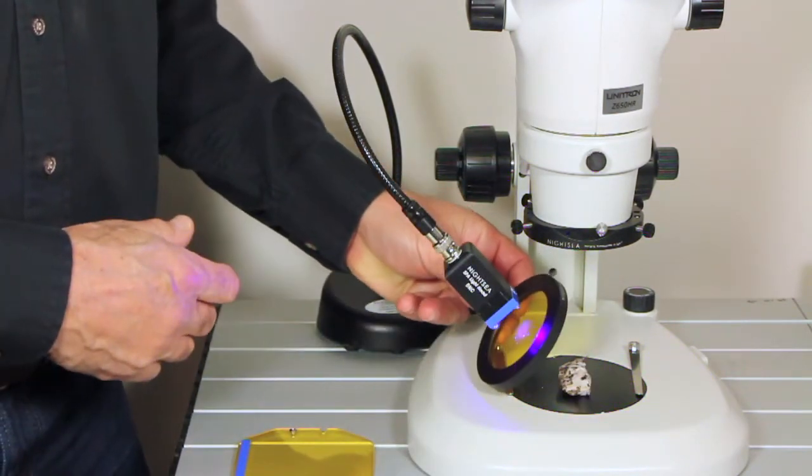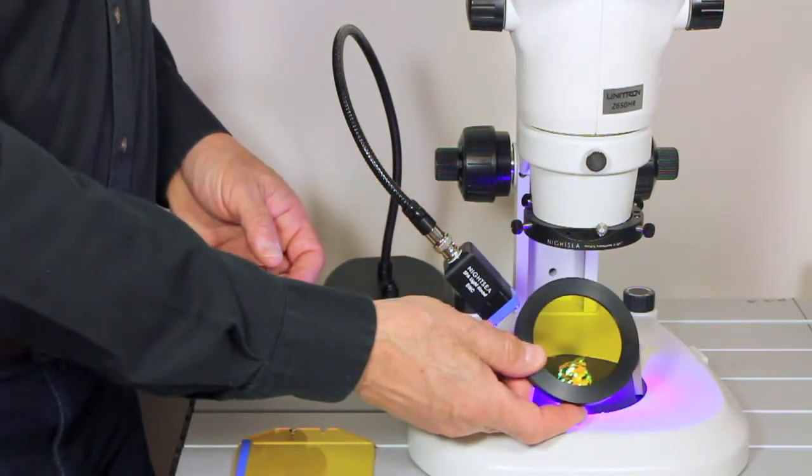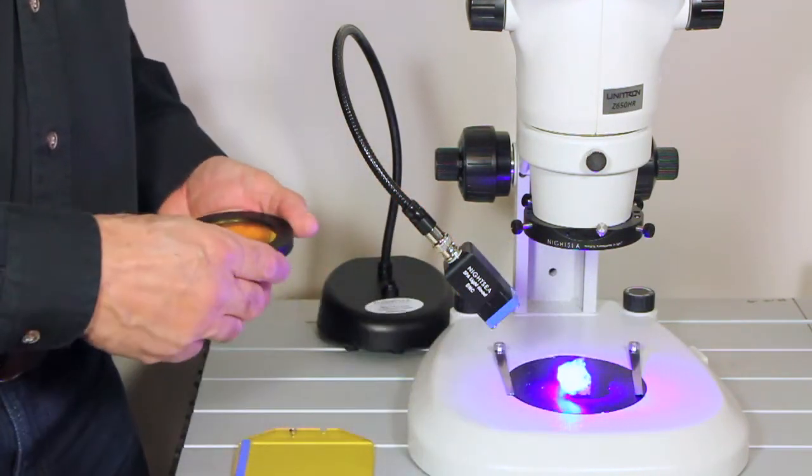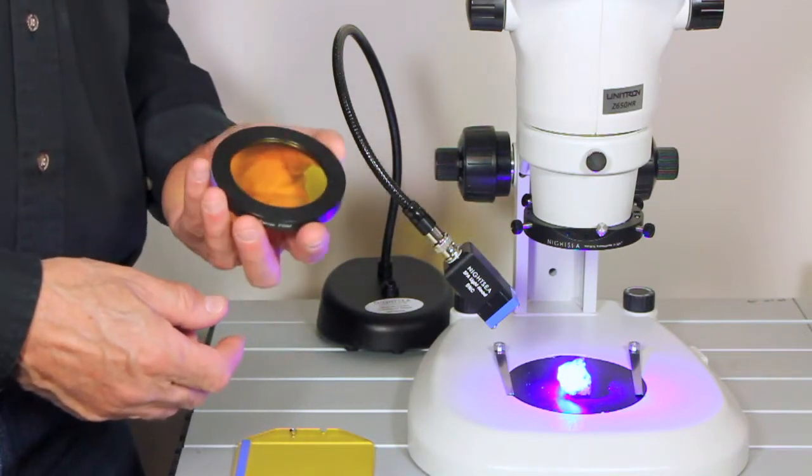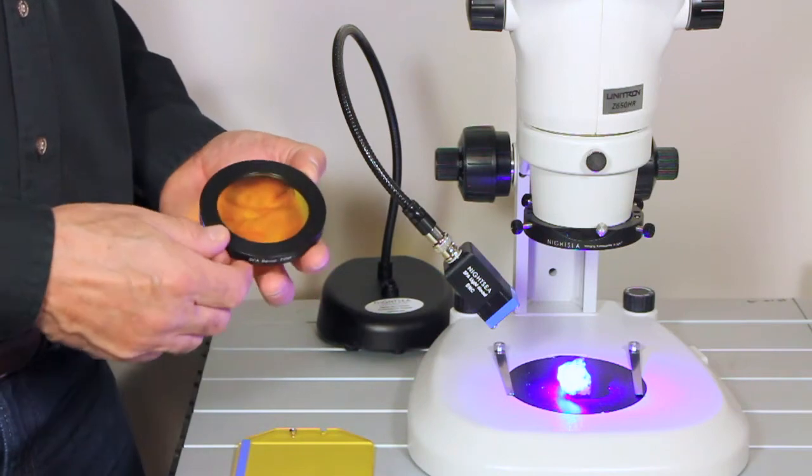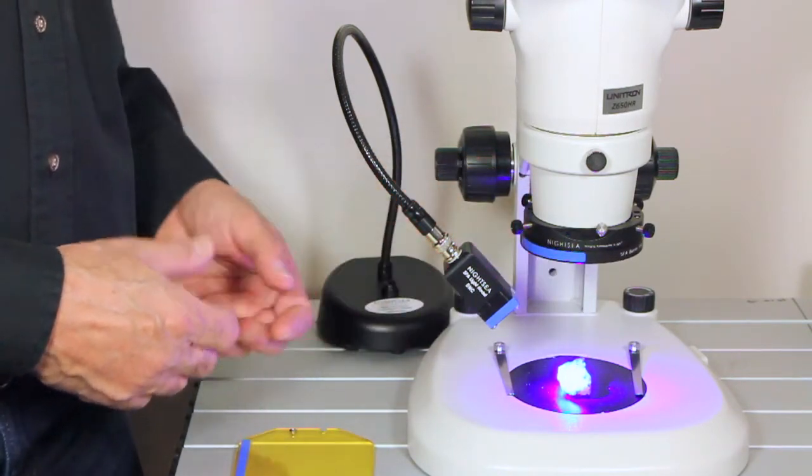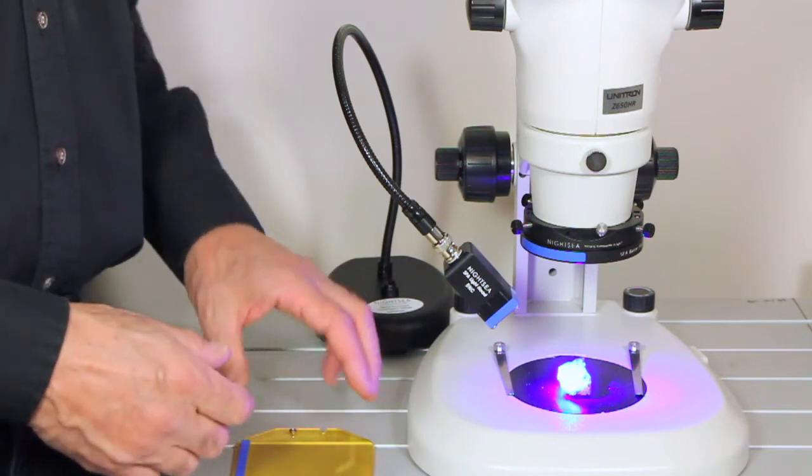Its job is to block all the excitation light and transmit the fluorescence. And the purpose of the adapter ring is to hold this in the optical path so that when you're looking through the microscope with your eyes or a camera, you'll see the fluorescence. And that just attaches magnetically to that adapter ring. Easy to put on.